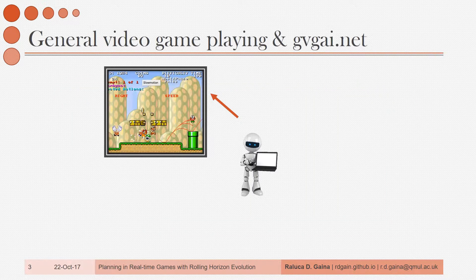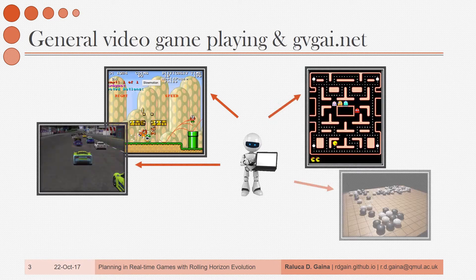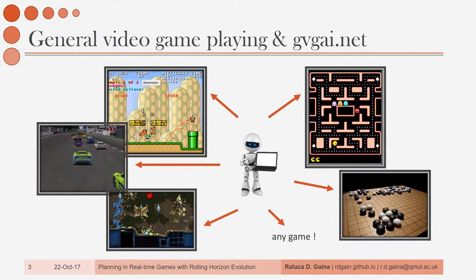And that is another task that I am interested in — achieving general intelligence, which would be a matter of creating an AI agent able to solve any new problem it is faced with, even if it hasn't seen it before. If you're doing this in real-time games, then we're referring to the domain of general video game playing. The general video game AI competition, which I am involved in as the organizer for the 2-player planning track, provides a framework for testing general agents on various problems.